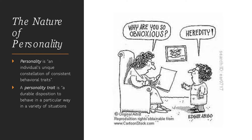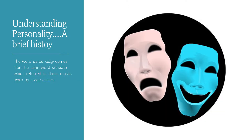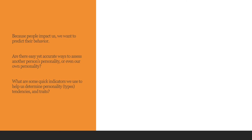Let's first look at what personality is. Personality can be described as an individual's unique constellation of consistent behavioral traits. A trait is a durable disposition to behave in a particular way in a variety of situations. The word personality comes from the Latin word persona, which referred to masks that were worn by stage actors. Part of why we want to understand personality may be explained by our desire to predict behavior.